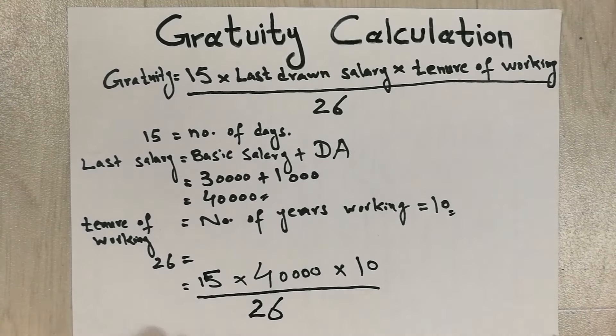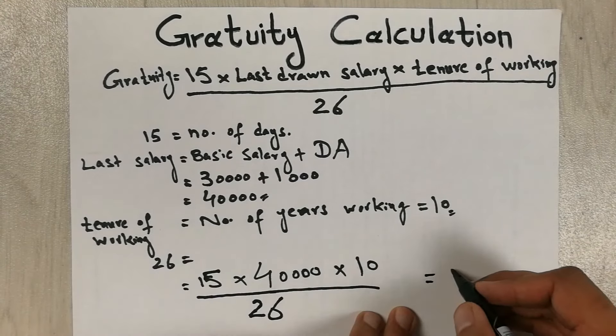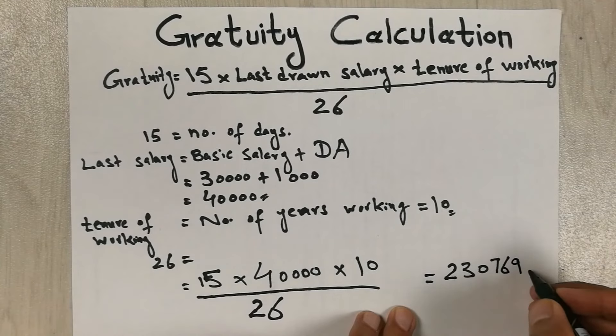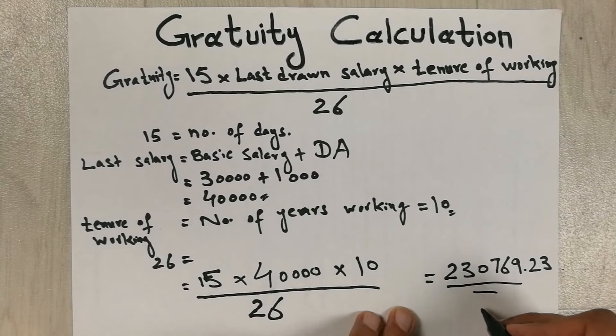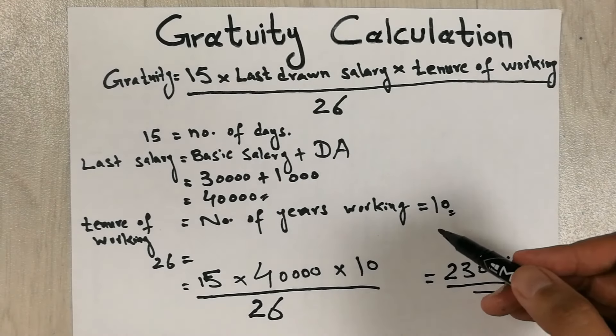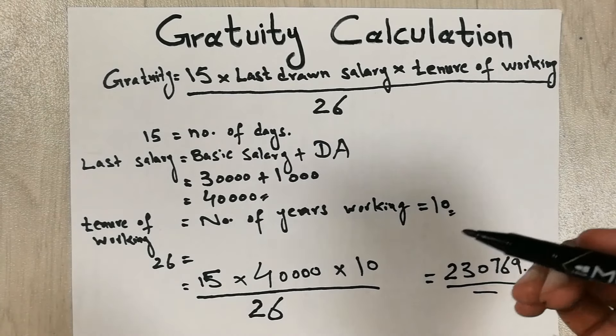So when we do all this calculation, our answer will be 230,769.23. So guys, this is our gratuity. So we can say it like 2 lakh 30,000, 769 rupees and 23 paisas is our gratuity after 10 years of service. So guys, this is how you can calculate the gratuity.